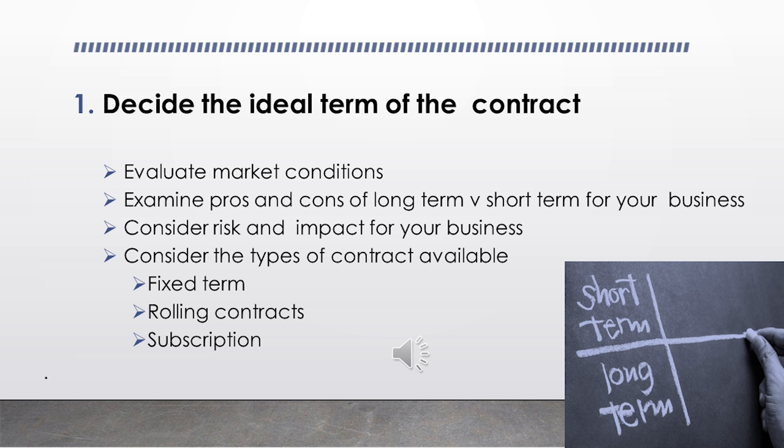Once you've examined the pros and cons of both short and long term for your business, you need to consider the type of contract you want. There are many types but the most popular in retail include: first, a fixed-term contract, which has a start date and an end date and is automatically terminated upon expiry. This provides both parties the opportunity to negotiate new terms or source new suppliers or products based on market conditions. Another commonly used type is a rolling contract, similar to the initial fixed term.